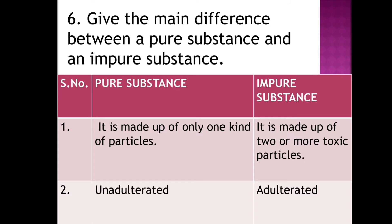Give the main difference between a pure substance and an impure substance. First difference: a pure substance is made up of only one kind of particles; an impure substance is made up of two or more kinds of particles. Second difference: a pure substance is unadulterated; an impure substance is adulterated.